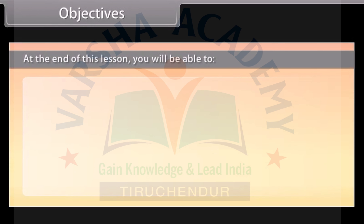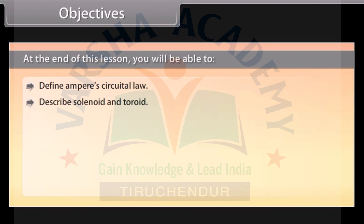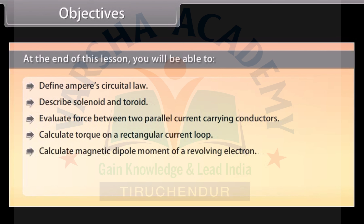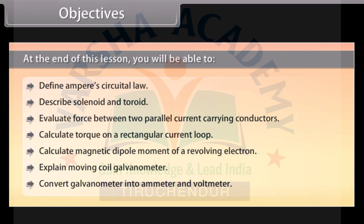At the end of this lesson, we'll be able to: Define Ampere's Circuital Law; Describe solenoid and toroid; Evaluate force between two parallel current carrying conductors; Calculate torque on a rectangular current loop; Calculate magnetic dipole moment of a revolving electron; Explain moving coil galvanometer; Convert galvanometer into ammeter and voltmeter.